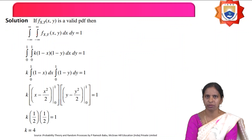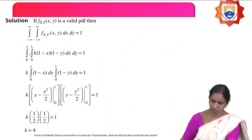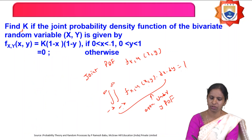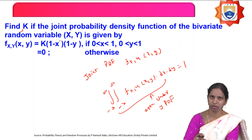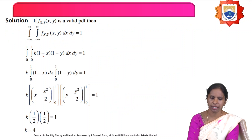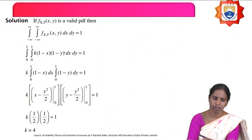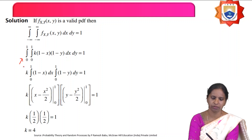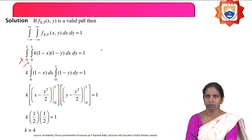So, integration from 0 to 1 and 0 to 1 — since x and y are given from 0 to 1 — of k(1−x)(1−y) dx dy equals 1. The limits of x here are 0 to 1 and the limits of y here are 0 to 1.